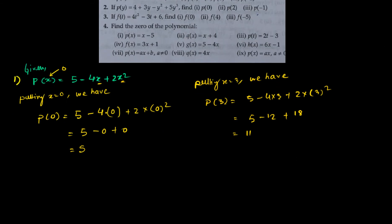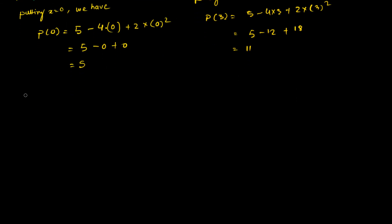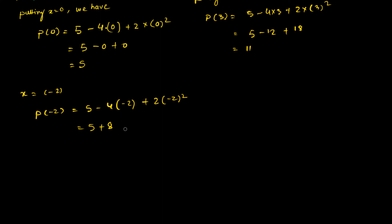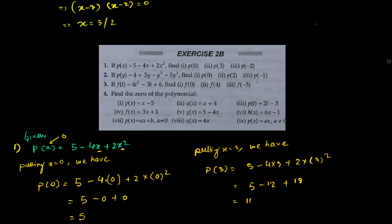They also want us to find p(-2). Putting x equals to minus 2, p(-2) becomes 5 minus 4 times (-2) plus 2 times (-2) squared. That gives 5 plus 8 plus 8, which is 21. So the answers for question one are p(0)=5, p(3)=11, and p(-2)=21.